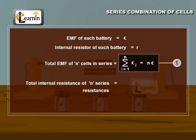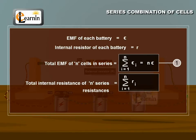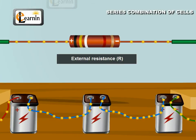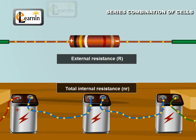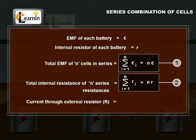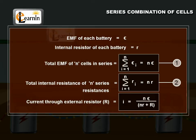The total internal resistance of n series resistances will be the sum of all resistances, which would be n times r. Consider this as equation 2. The external resistance R is in series with the total internal resistance, and so the current through R is given by: I equals n epsilon divided by n r plus R.